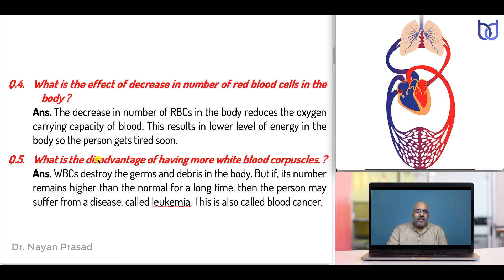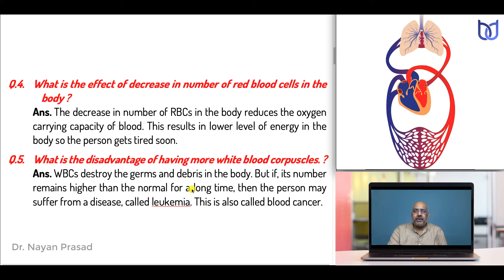What is the disadvantage of having more white blood corpuscles, or leukocytes — also called the internal soldiers of the body? WBCs destroy the germs and debris in the body, but if their number remains higher than normal for a long time, then the person may suffer from a disease called leukemia, also called blood cancer.